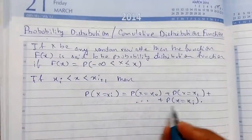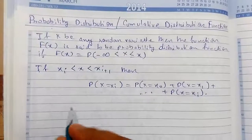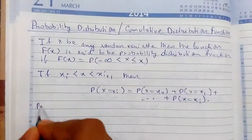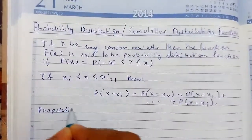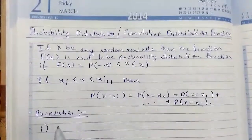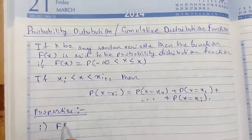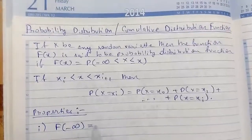So I will explain this. First of all I will just write a property. So the first property is: probability distribution function at negative infinity is 0, probability at infinity is 1.